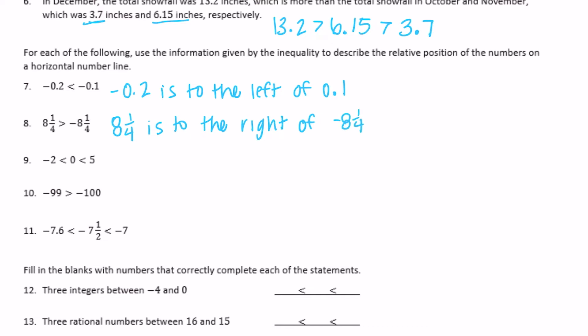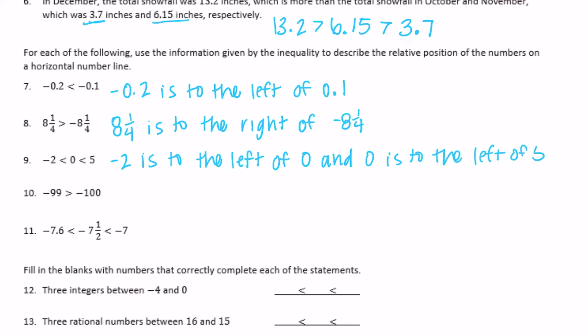Negative two is less than zero, is less than five. So negative two is to the left of zero, and zero is to the left of five.